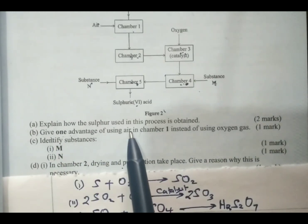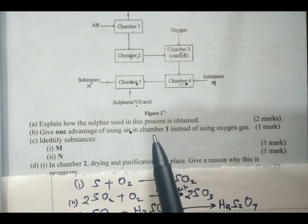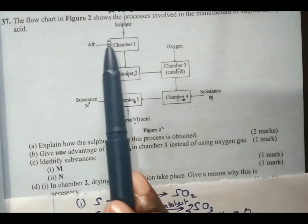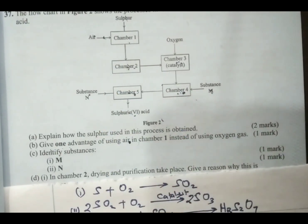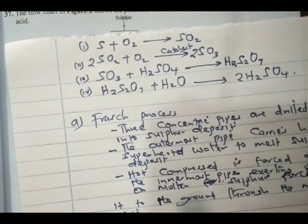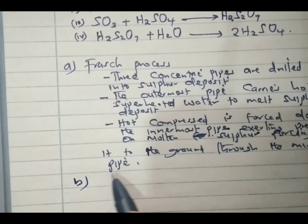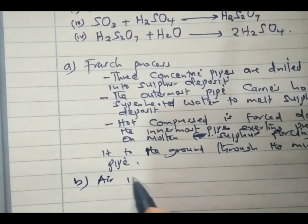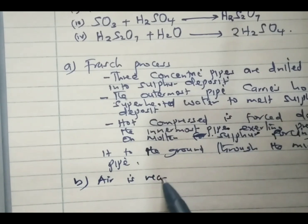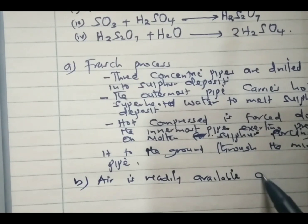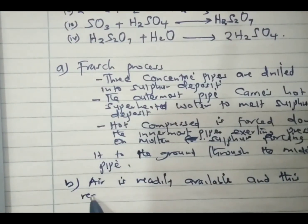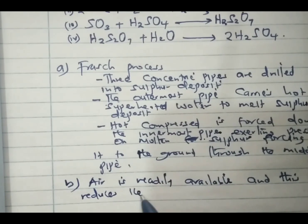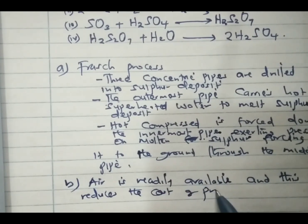Part B: Give one advantage of using air in chamber 1 instead of using oxygen. You realize in chamber 1 we have air, and we use air because it is readily available. Air is readily available, and this reduces the cost of production.